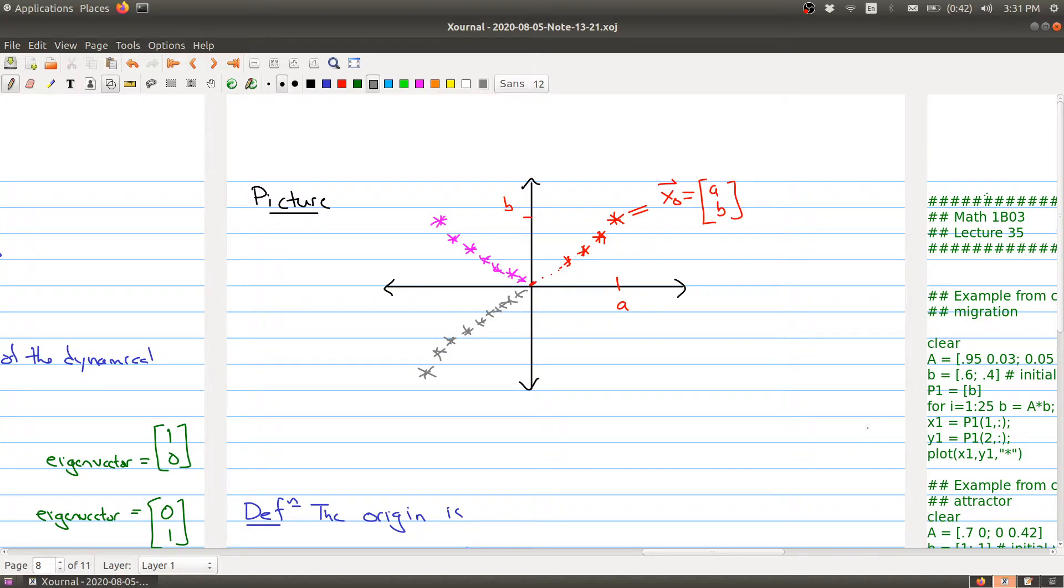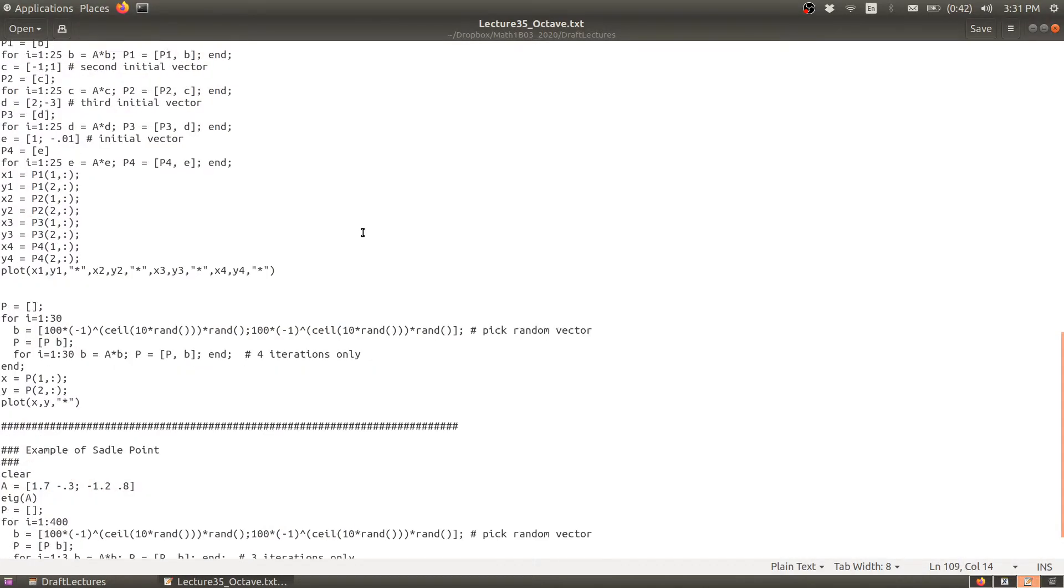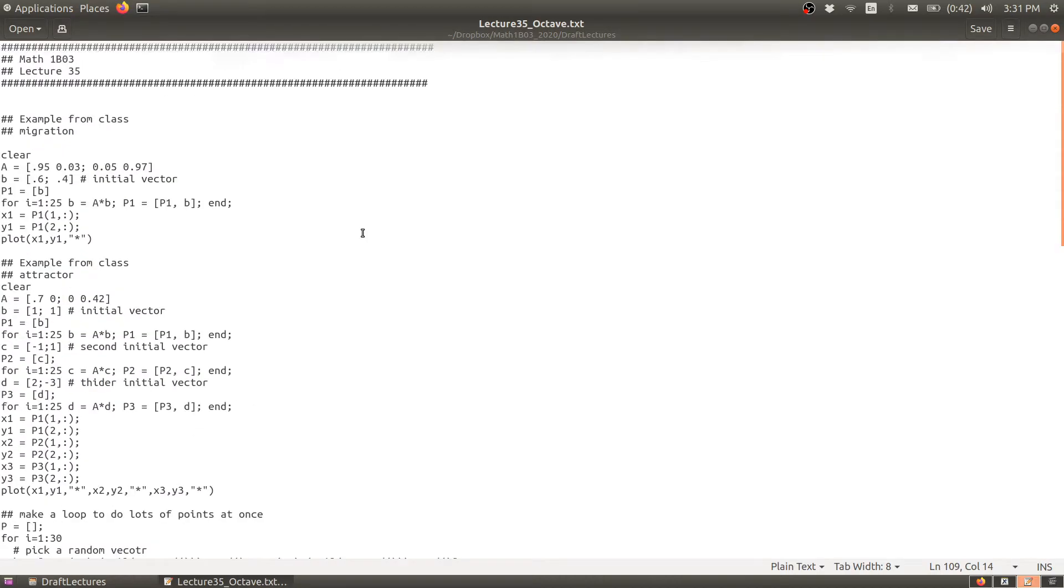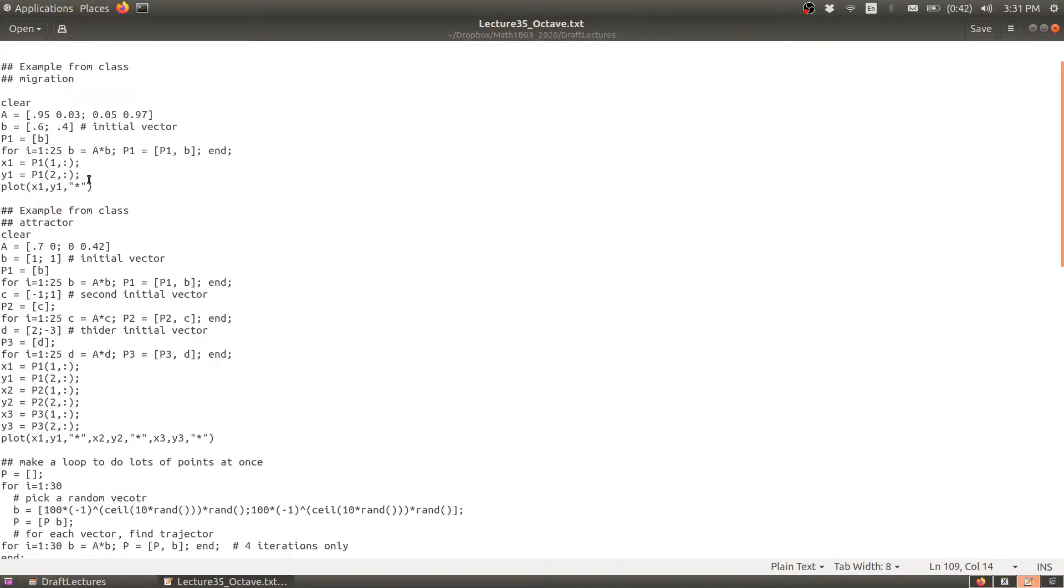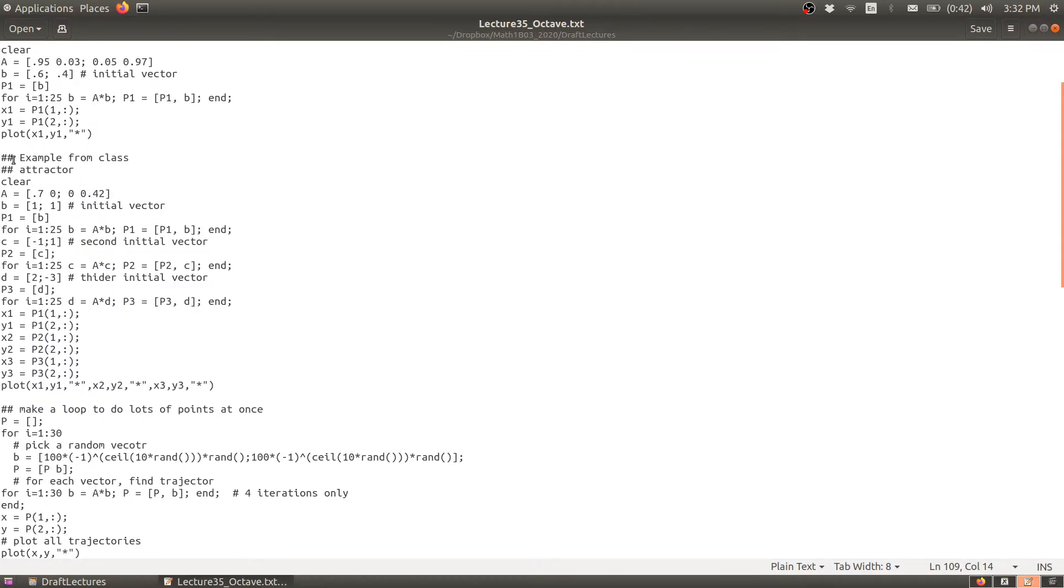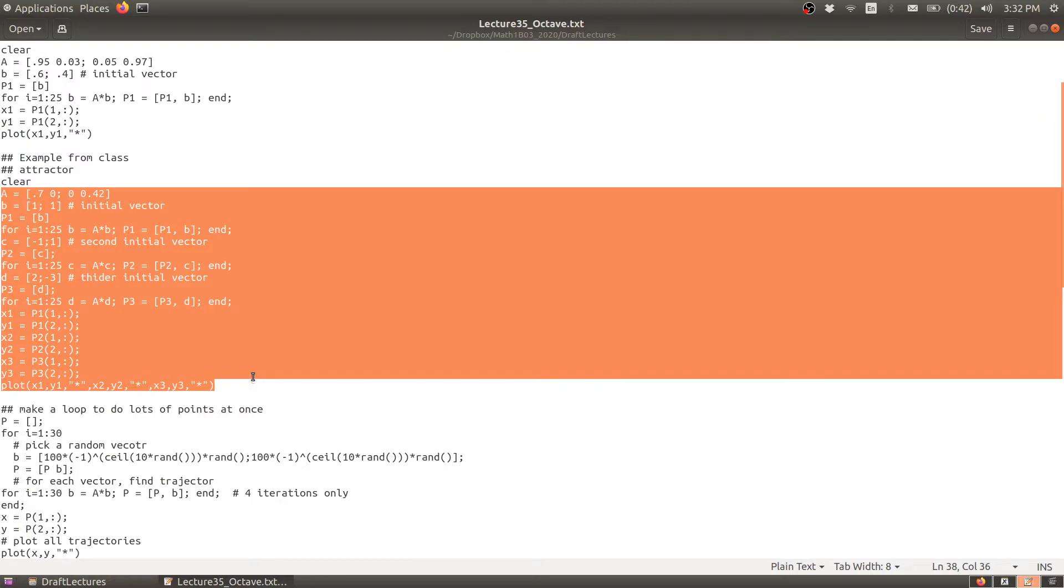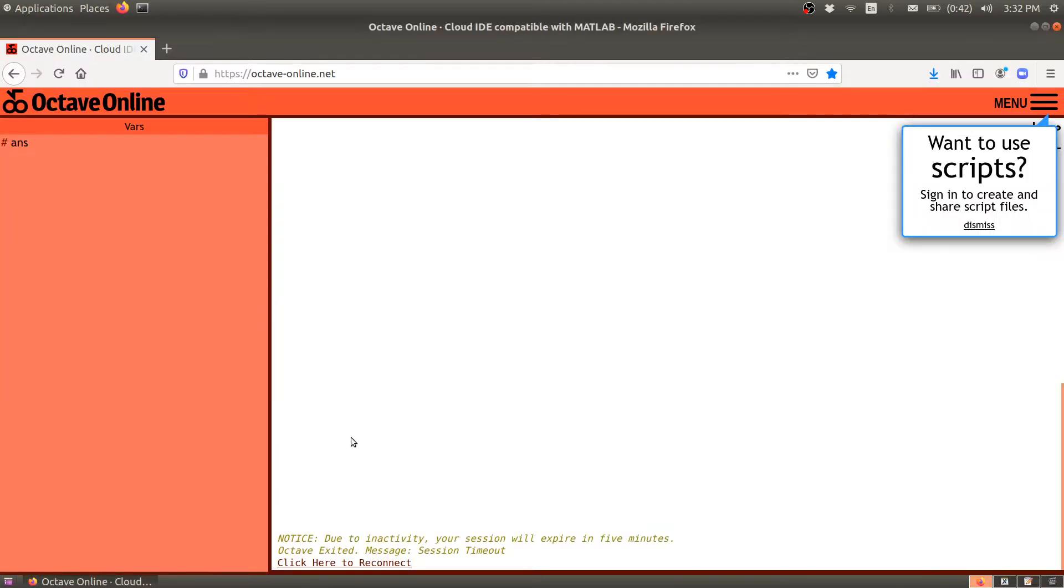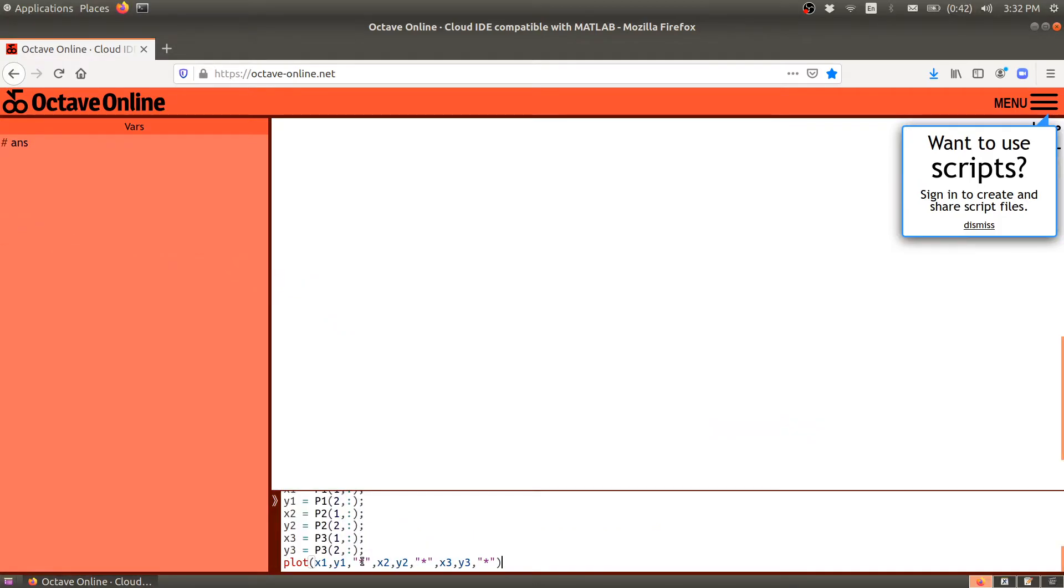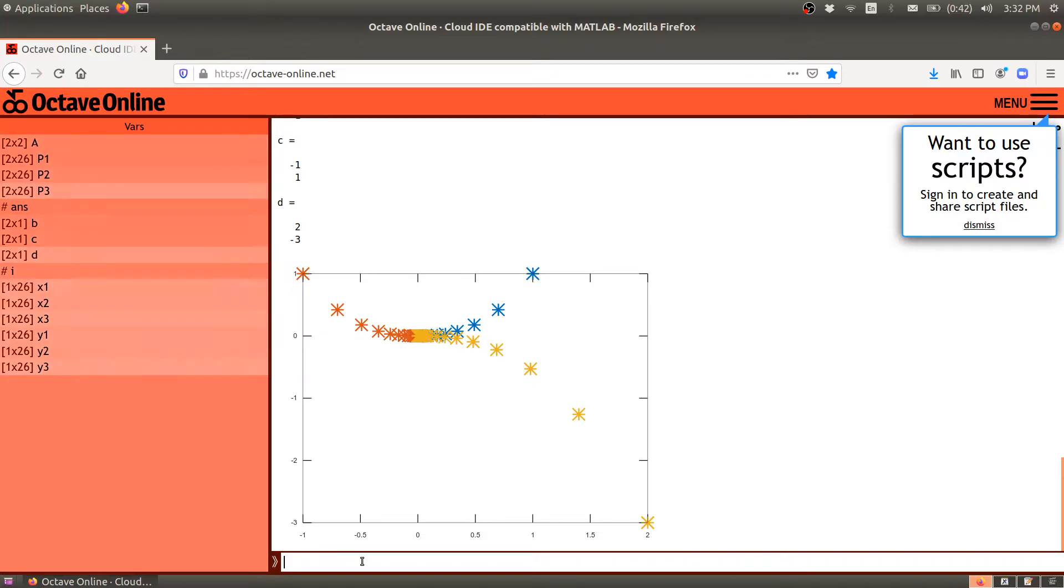But let me actually just illustrate this through Octave. Okay. So first of all, here's some code that I have here. And you can play around with it. Let me first put away the, ignore the first example here. We'll come back to that in a second. And let me cut and paste this here. So here's my Octave. Let's reconnect. And I'll plot these points. And I'll explain my code here in a second.